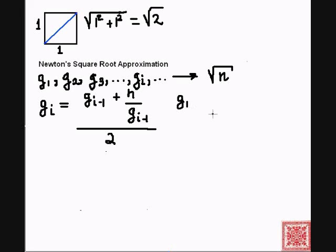Let's say that we have our first guess, then the second guess, given that we have g1, can be computed as g1 plus n over g1 divided by 2. Once we have the second guess, we can go and compute the third guess, g3.